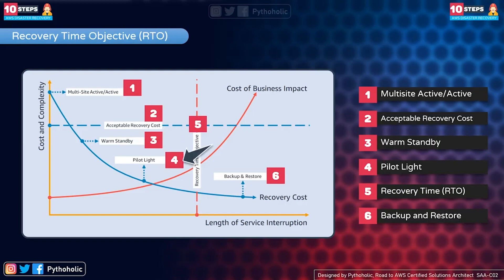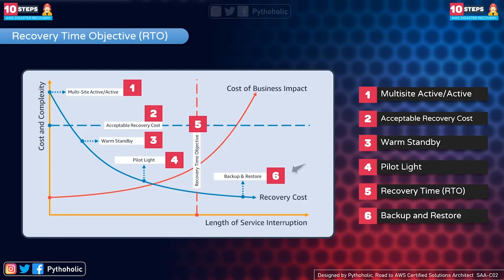Next is the pilot light disaster recovery strategy. In the pilot light approach, only the most core components — like critical data and storage replicas — are replicated in another region, while other services are turned off and only used during testing. When a disaster occurs, you can rapidly launch the full setup. This is very good for cost and also reasonable for RTO.